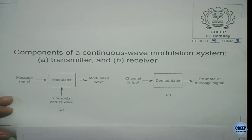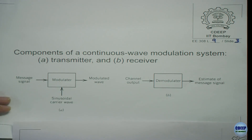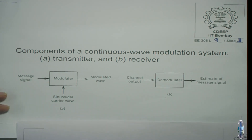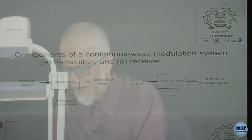There are different kinds of modulations. We have what is known as amplitude modulation, and then we have what is known as angle modulation. There are two forms of angle modulation: frequency modulation and phase modulation.